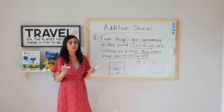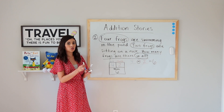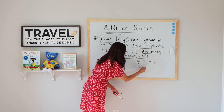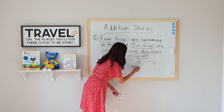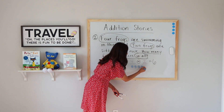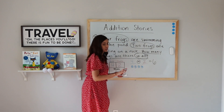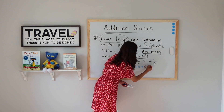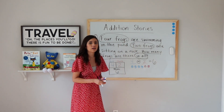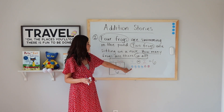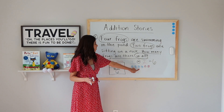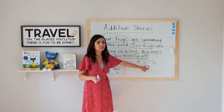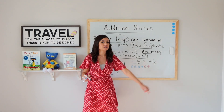And if you need visuals, remember, you can draw pictures. I have four circles plus two more. Let's count them all to make sure that we have a total of six: one, two, three, four, five, six. Is that what we got? Yes — good job.